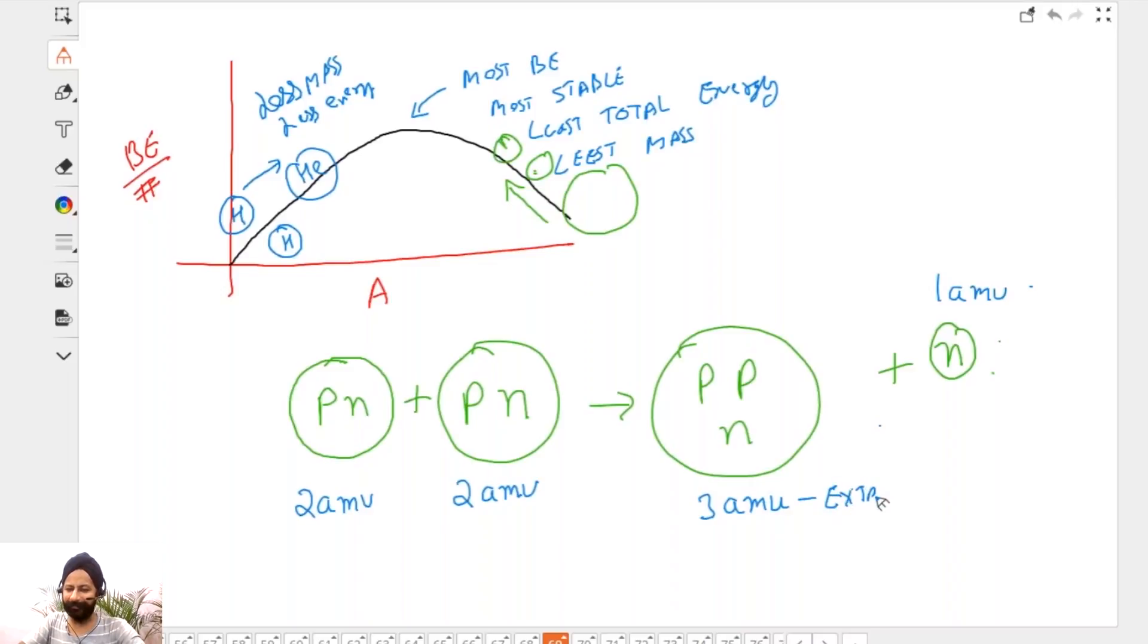But then we are saying this is not going to be 3 amu. This is going to be 3 amu minus the extra binding energy. Remember, you're going up here. You have more binding energy when you go up. There is more binding energy, but that energy is negative, so then this is not 3 amu, this is less mass now. This is what we are talking about. It has more mass compared to hydrogen, but that more mass actually has a mass defect in there.